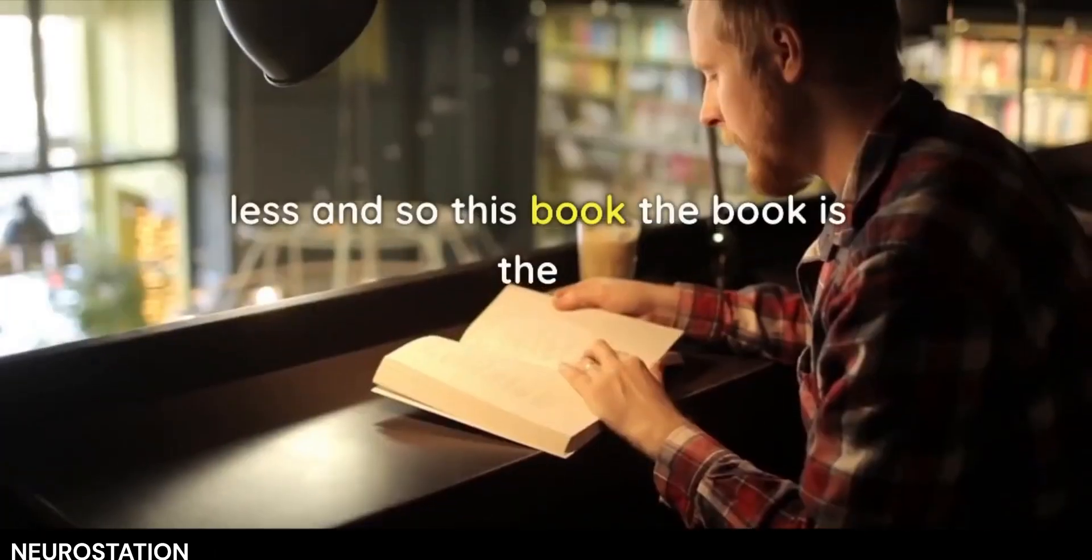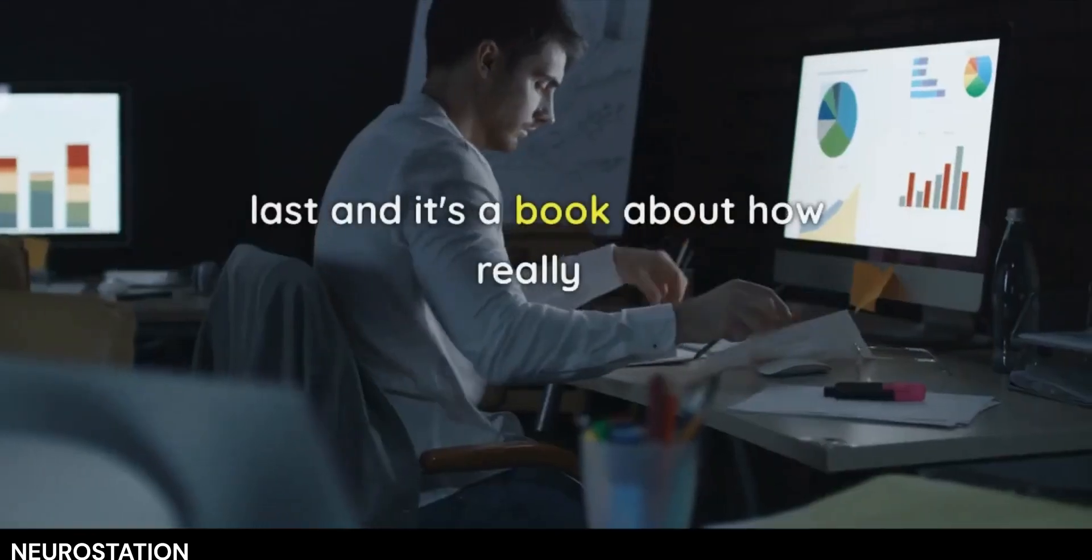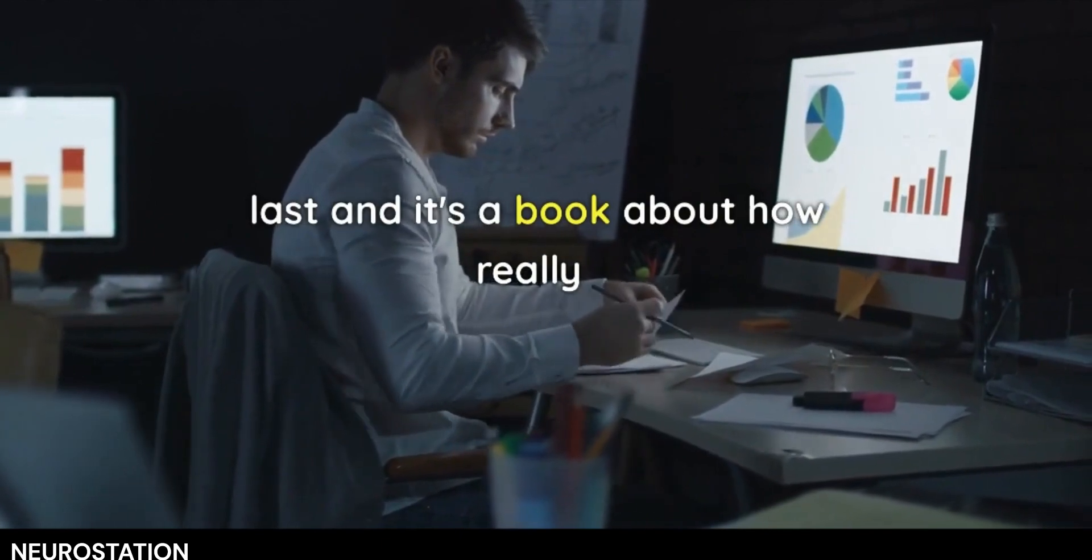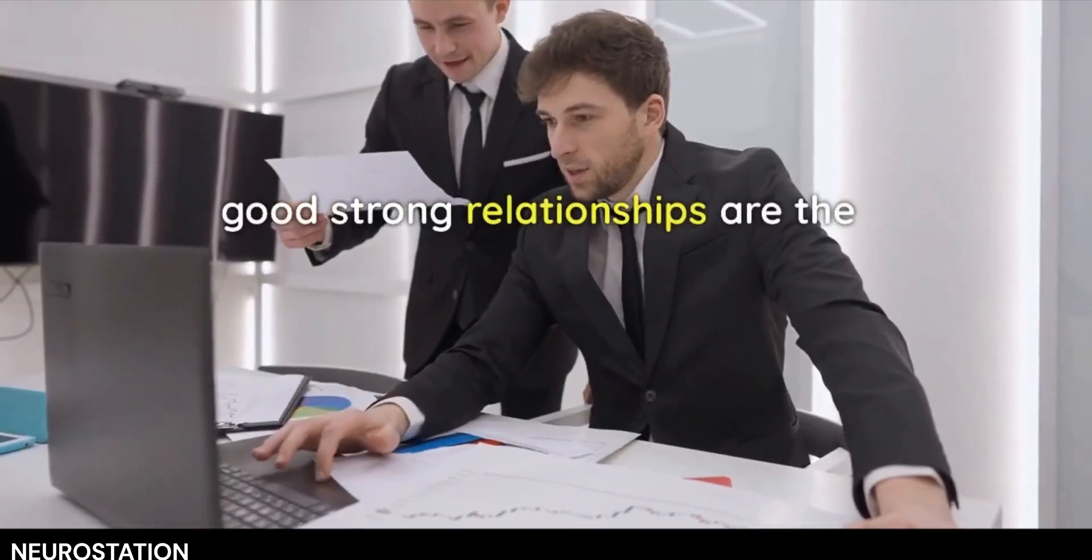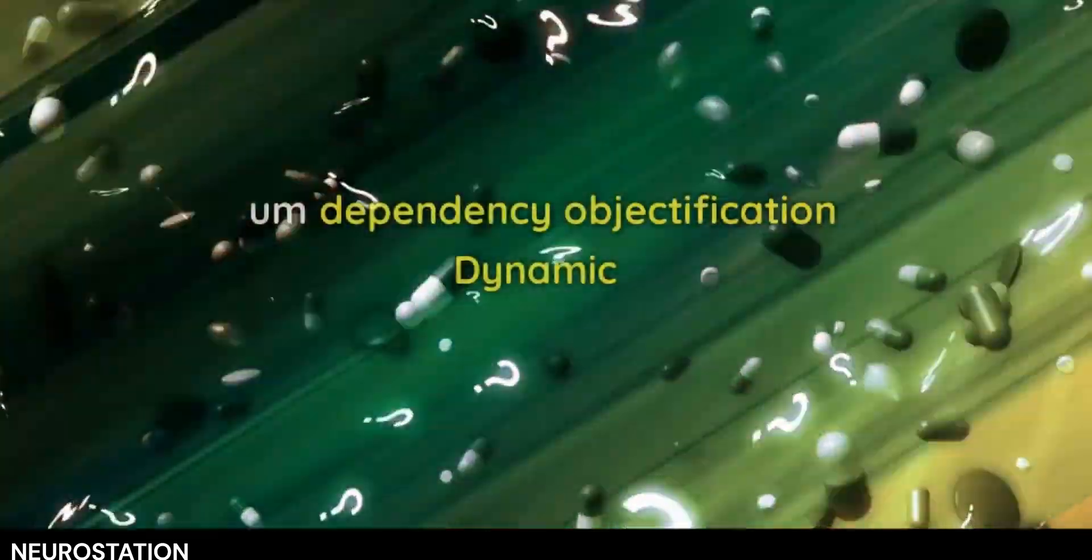And so this book—the name is kind of corny, but it's written by an analyst. It's called 'Can Love Last,' and it's a book about how really good, strong relationships are the consequence of people constantly moving through this dependency-objectification dynamic.